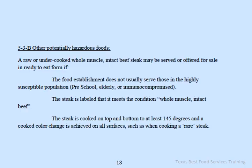A raw or undercooked whole muscle intact beef steak may be served in ready-to-eat form if the establishment does not usually serve those in the highly susceptible population — preschool children, the elderly, and the immunocompromised — and the steak is labeled as whole muscle intact beef, cooked on top and bottom to at least 145 degrees, with a cooked color change achieved on all surfaces.